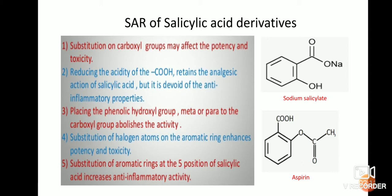Reducing the acidity of the carboxylic group retains the analgesic action of salicylic acid but diminishes the anti-inflammatory properties. So the first point is: substitution on the carboxylic group may affect potency and toxicity. Reducing the carboxylic acid acidity retains analgesic action but divides the anti-inflammatory properties.